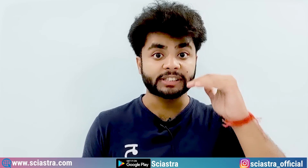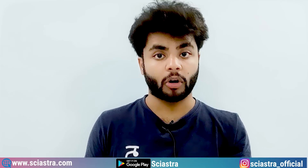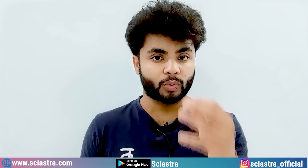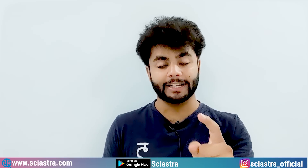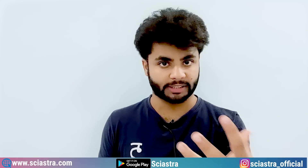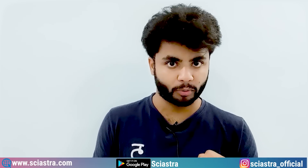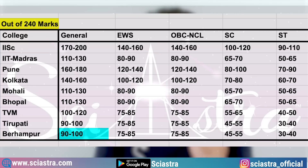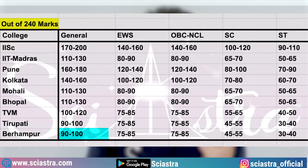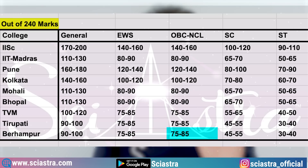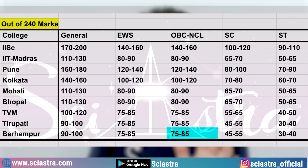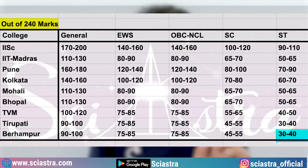If you want to secure a particular ISER, IISc Bangalore, or IIT Madras, here is what you must target in your practice papers or mock tests — this is the ISER Berhampur data. For General category, target a minimum of 90–100 marks; EWS 75–85; OBC NCL 75–85; SC 45–55; and ST 30–40 marks minimum.